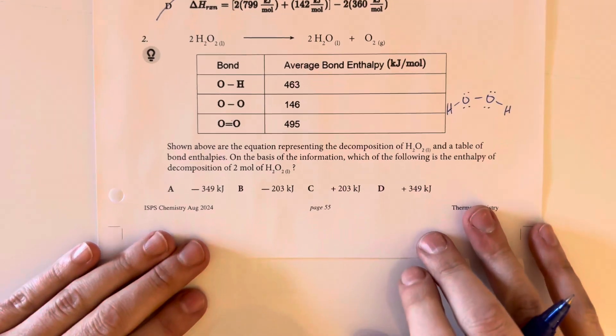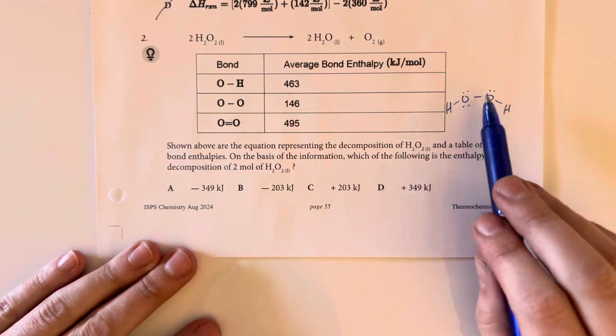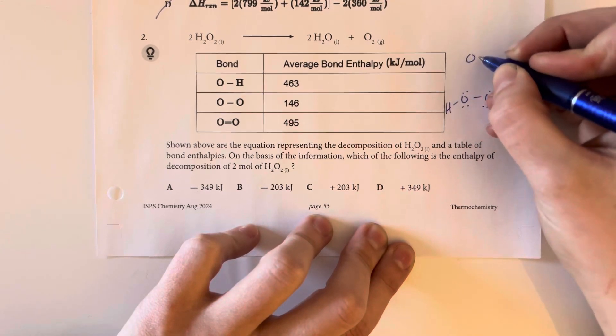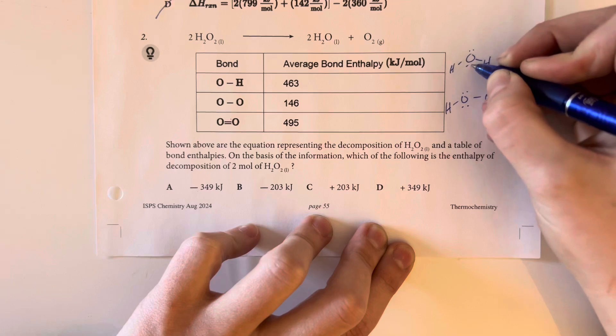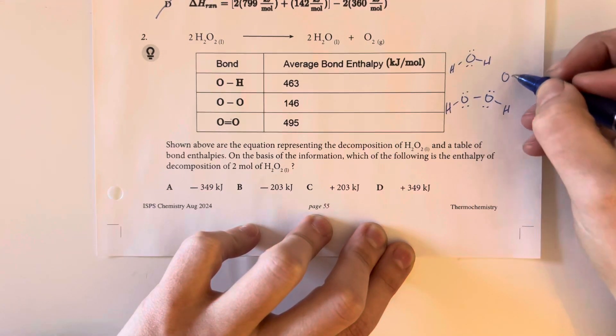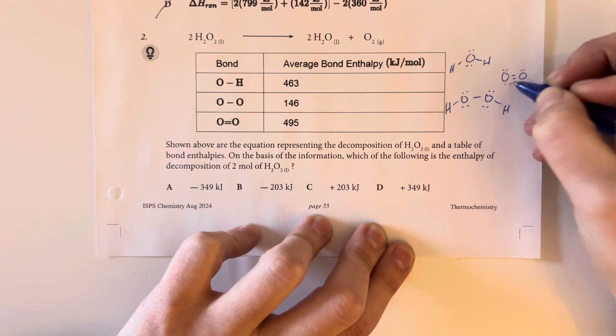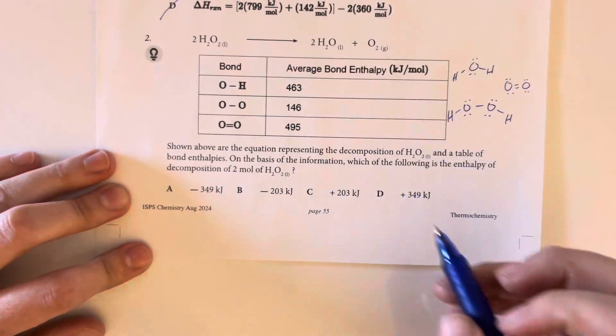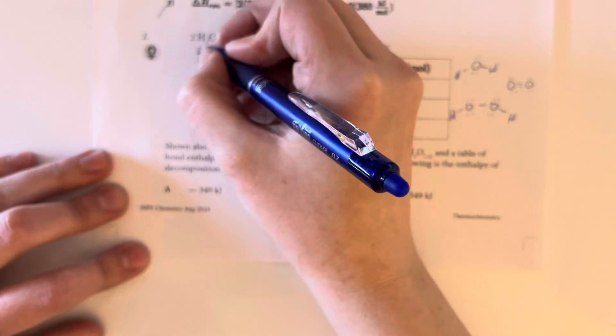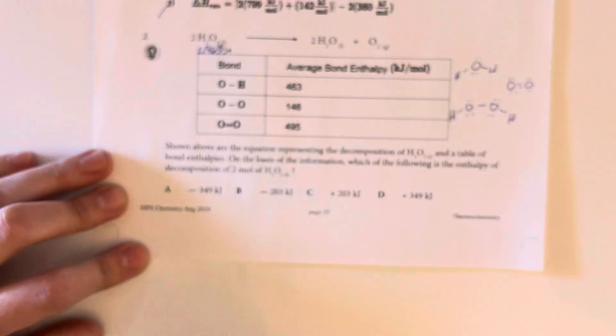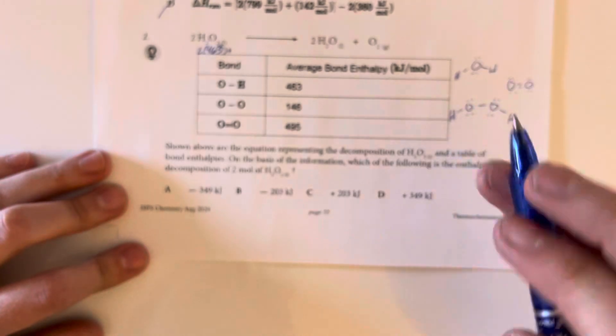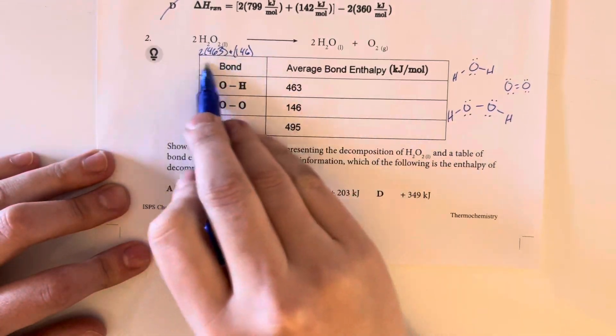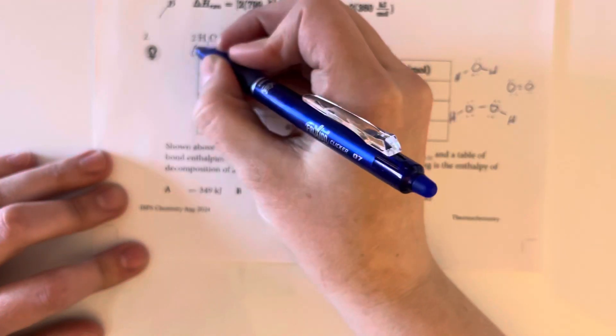That means we have to deal with three bond types. For water, it's going to look like this. And then oxygen is just a simple double bond. For the hydrogen peroxide, I'm going to have two of these, so two times the 463 plus the single bond oxygen here, so the 146. That's going to be for just one hydrogen peroxide. However, I have two of them.